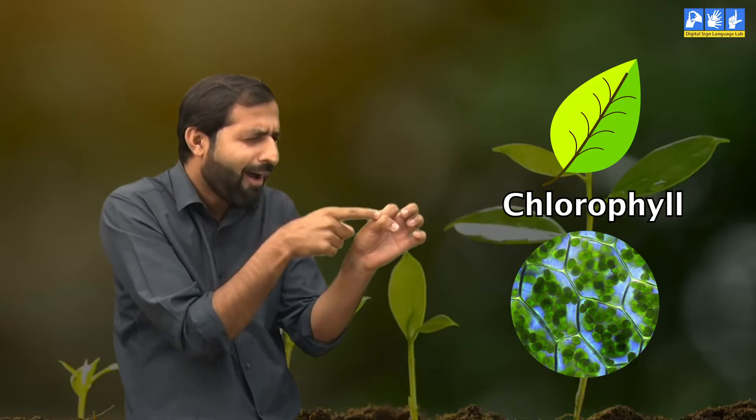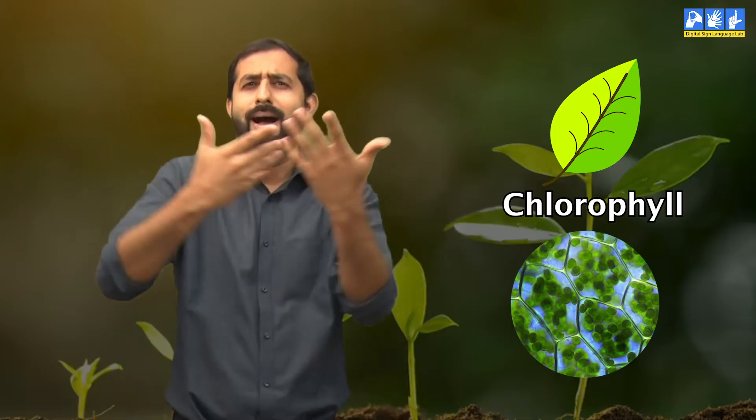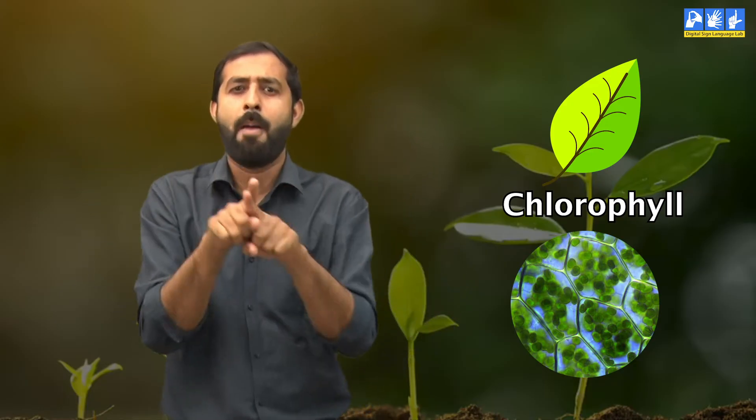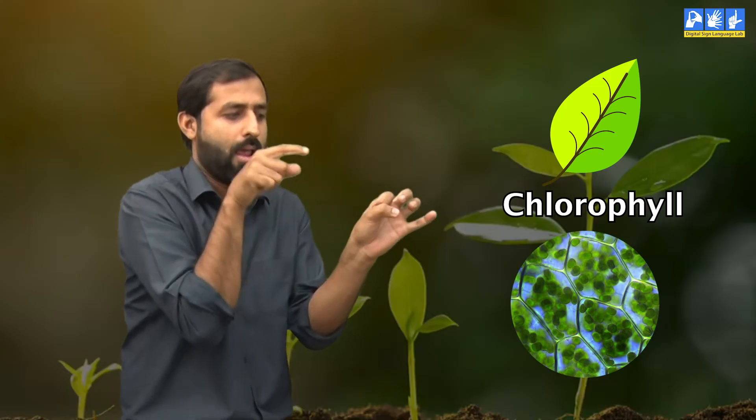Chloroplasts contain a pigment called chlorophyll. We see that all the plants and trees in our surroundings are green in colour. It is the chlorophyll which gives plants their green colour.